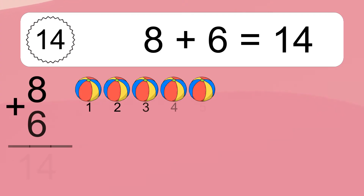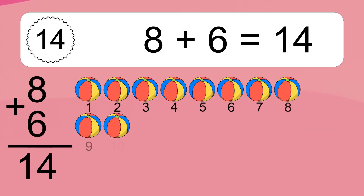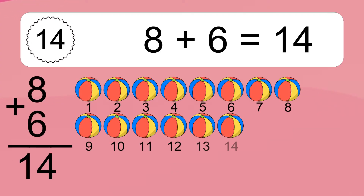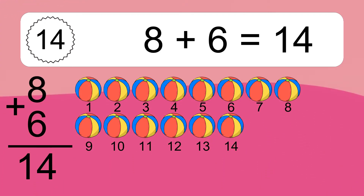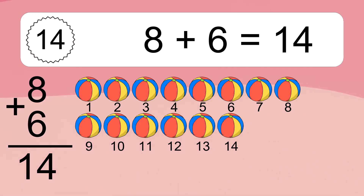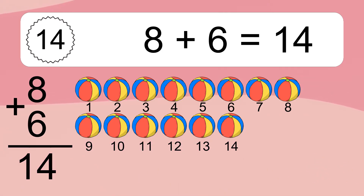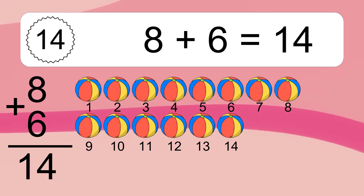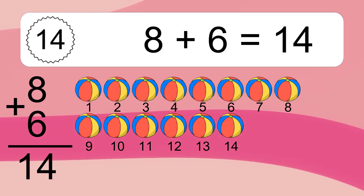Eight plus six equals what? Eight plus six equals fourteen. Let's count it: one, two, three, four, five, six, seven, eight, nine, ten, eleven, twelve, thirteen, fourteen.